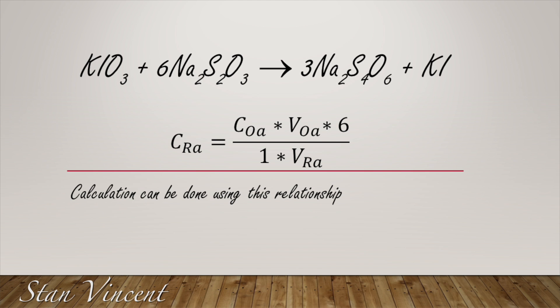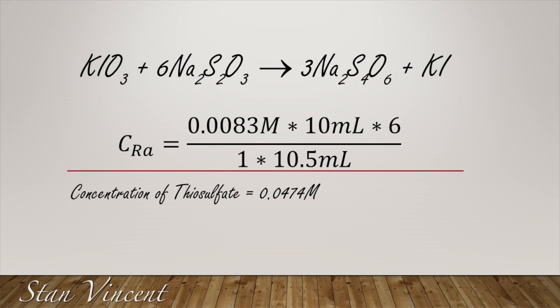Using values obtained from an actual experiment: the concentration of potassium iodate is 0.0083 molar, multiplied by the volume of the oxidizing agent (potassium iodate), which is 10 ml, times 6 (the coefficient of sodium thiosulfate), divided by the volume of the reducing agent, sodium thiosulfate, which was 10.5 ml. This gives a concentration of 0.0474 molar for the sodium thiosulfate.